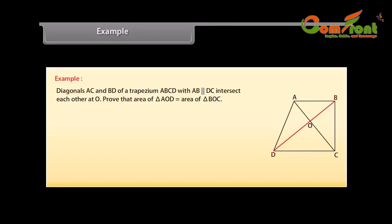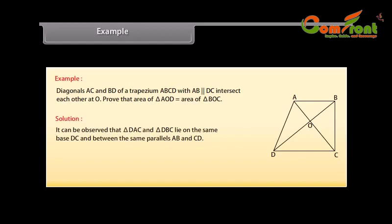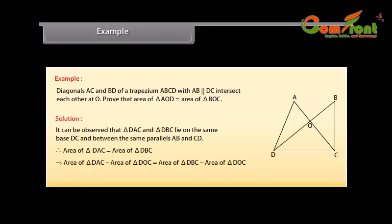Diagonals AC and BD of a trapezium ABCD with AB parallel to DC intersect each other at O. Prove that area of triangle AOD is equal to area of triangle BOC. It can be observed that triangle DAC and triangle DBC lie on the same base DC and between the same parallels AB and CD. Therefore, area of triangle DAC is equal to area of triangle DBC, which implies area of triangle DAC minus area of triangle DOC is equal to area of triangle DBC minus area of triangle DOC.